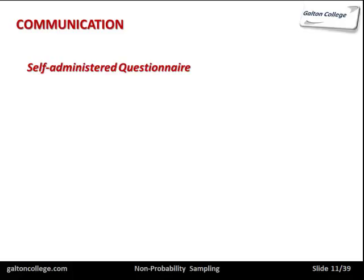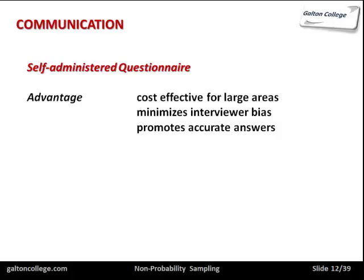Self-administered questionnaires: the idea is you give questionnaires out to people and go back later to pick them up, so people can answer the questions when they have more time. It's cost-effective — you can go to a large area, distribute many questionnaires, and return to collect the completed ones. It minimizes interviewer bias because the interviewer is not there. And it promotes people to answer questions accurately because they're on their own, with time to think.